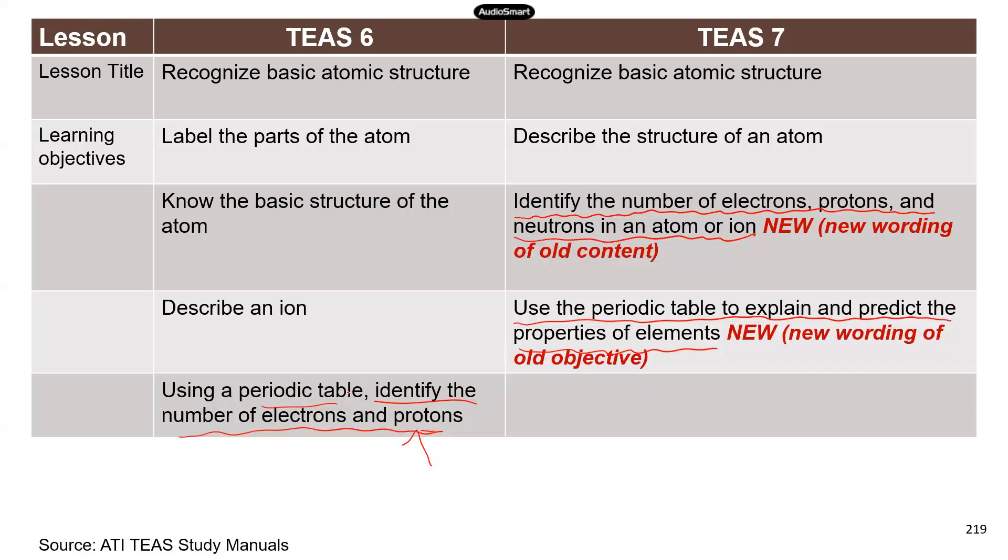But here, you kind of need to predict the properties of elements based on the information in the periodic table and how atoms may behave, right? Because they have a different number of electrons in the valence shell. So we're going to have two videos to discuss these two separate topics.